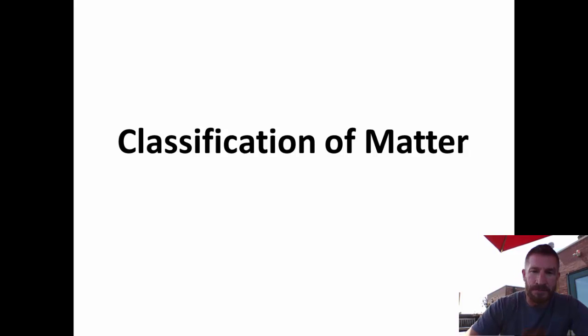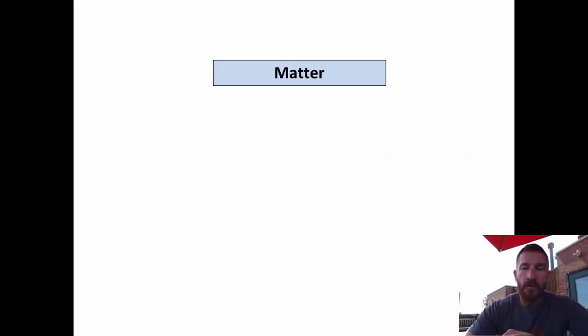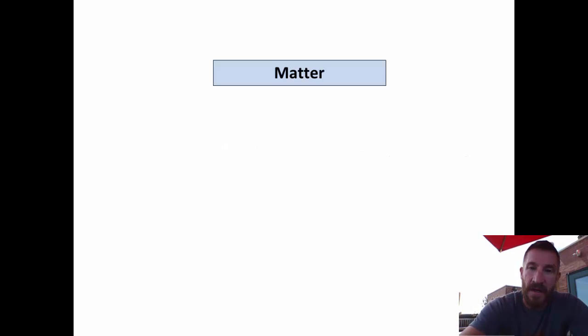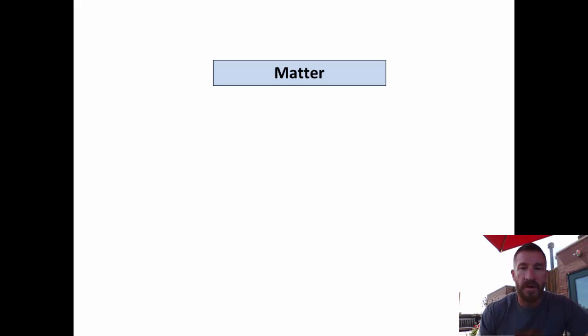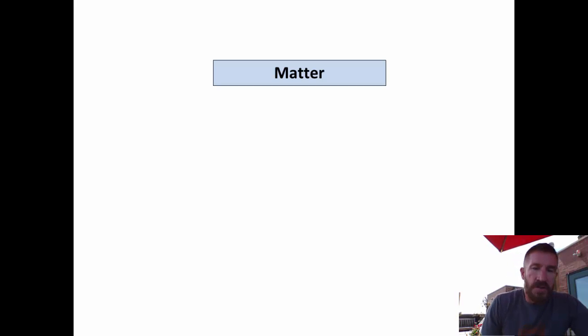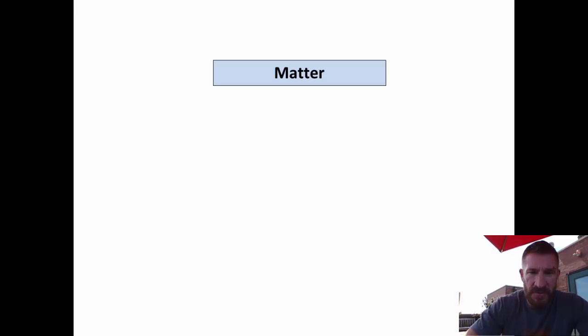Classification of matter. First of all, what is matter? Matter has mass and occupies space — another way of saying it occupies space is that it has volume. We're going to classify matter based on its properties into two groups.